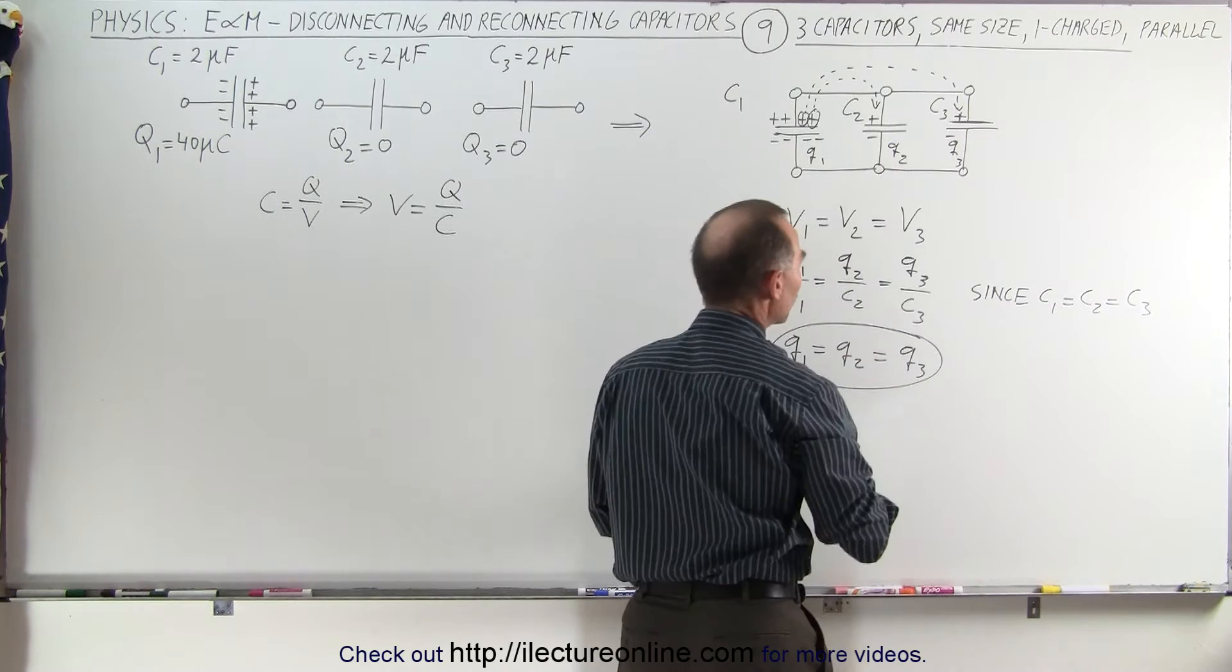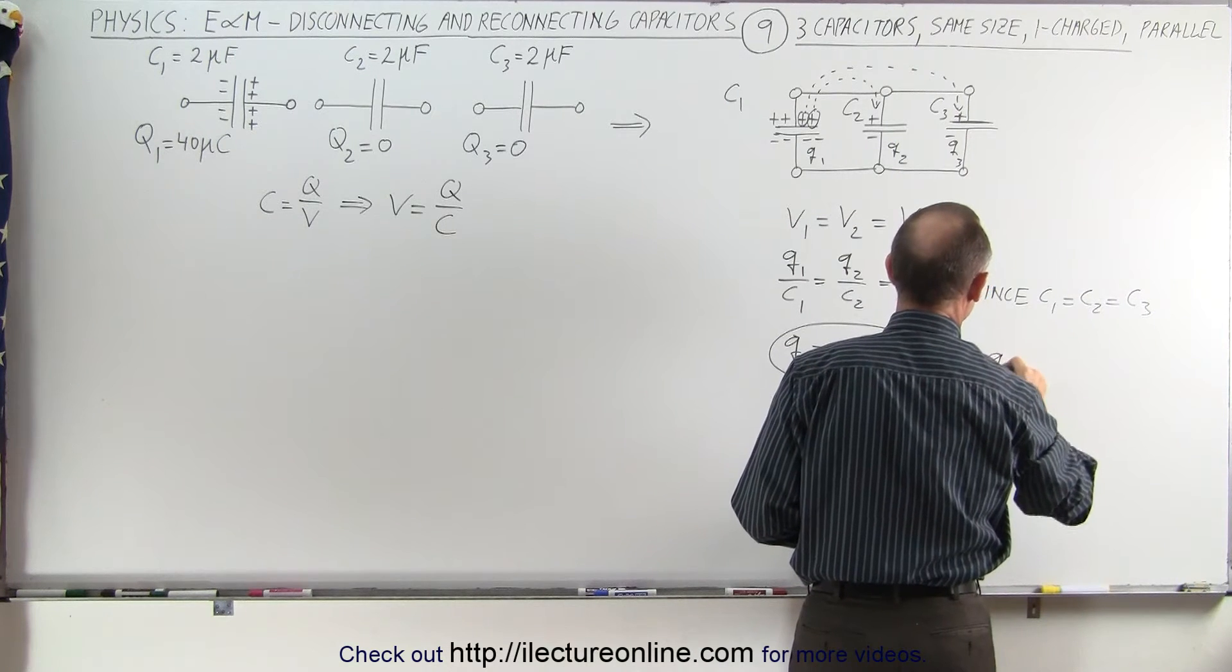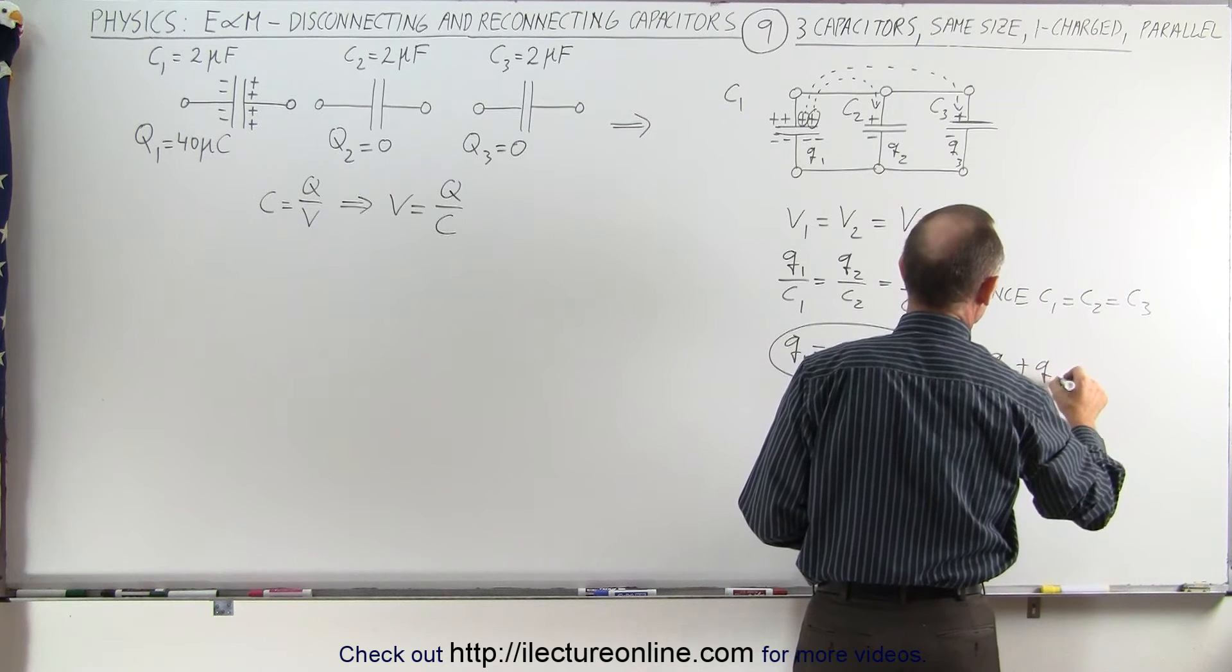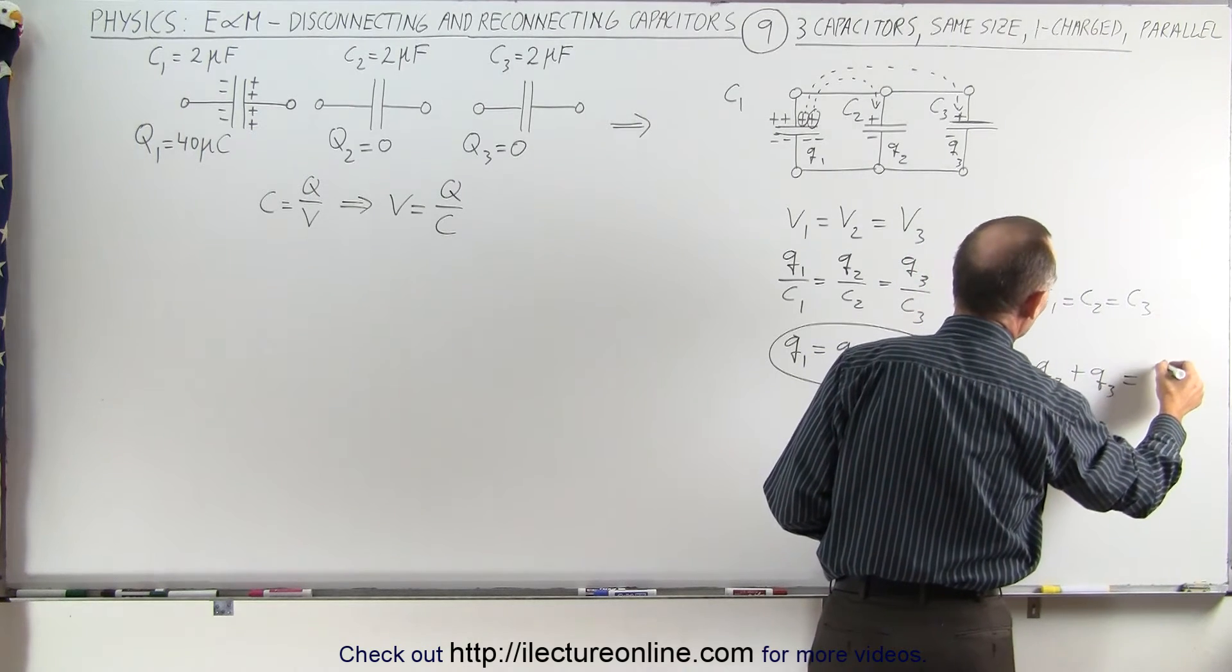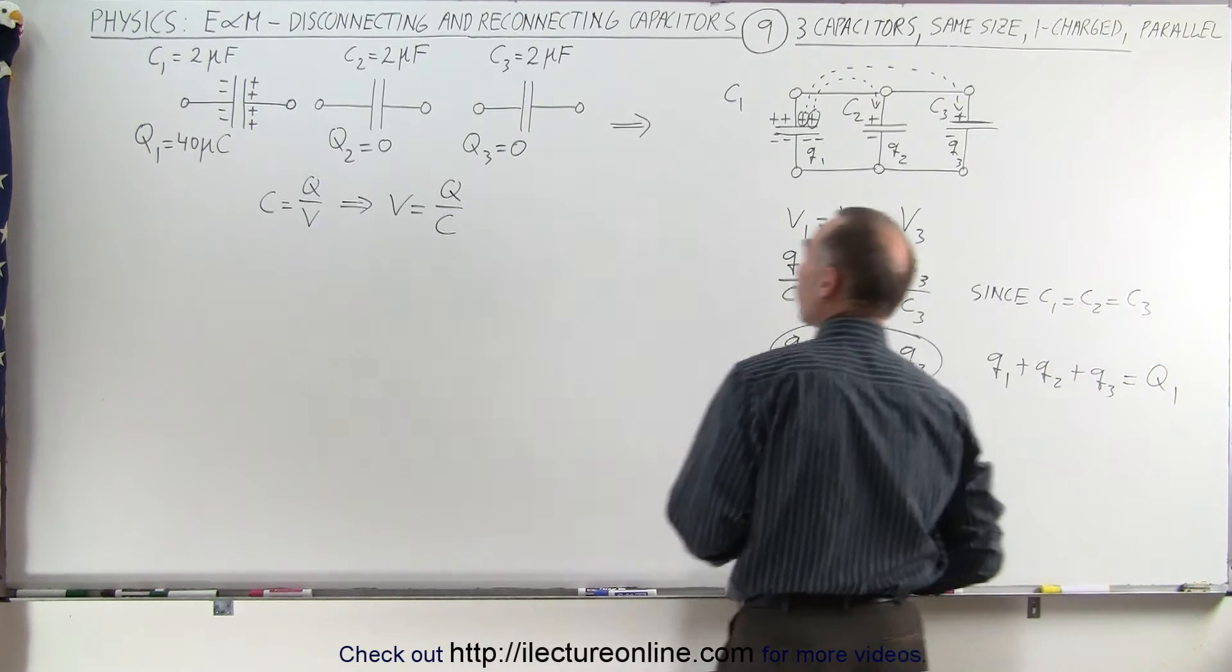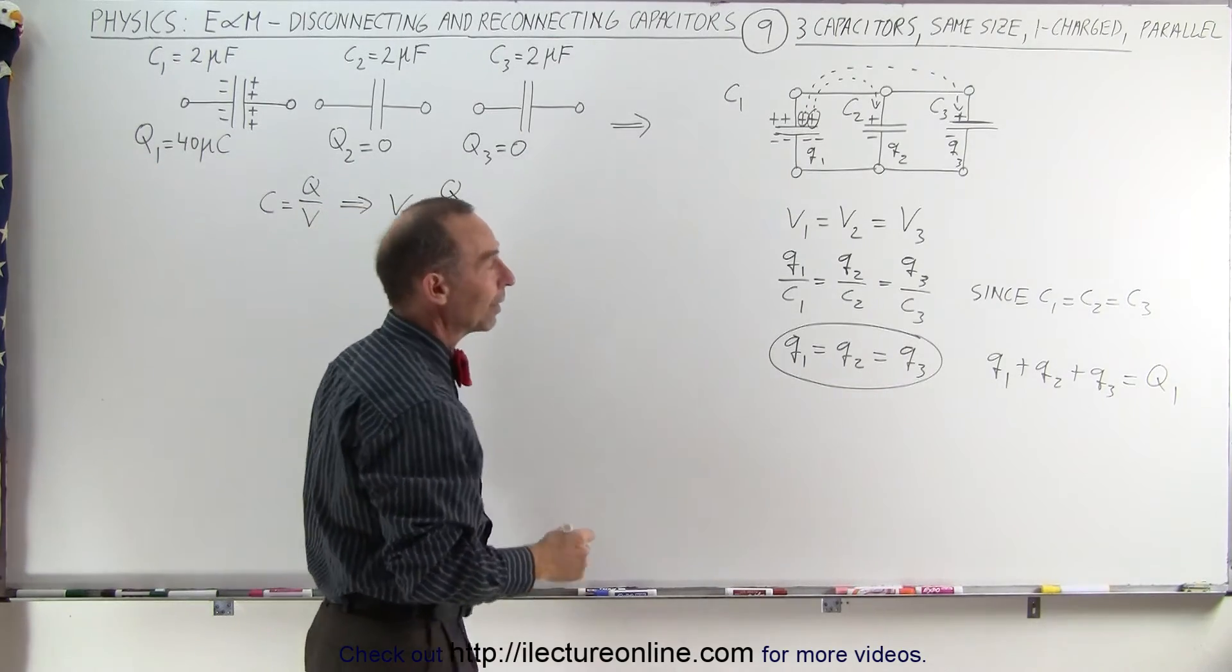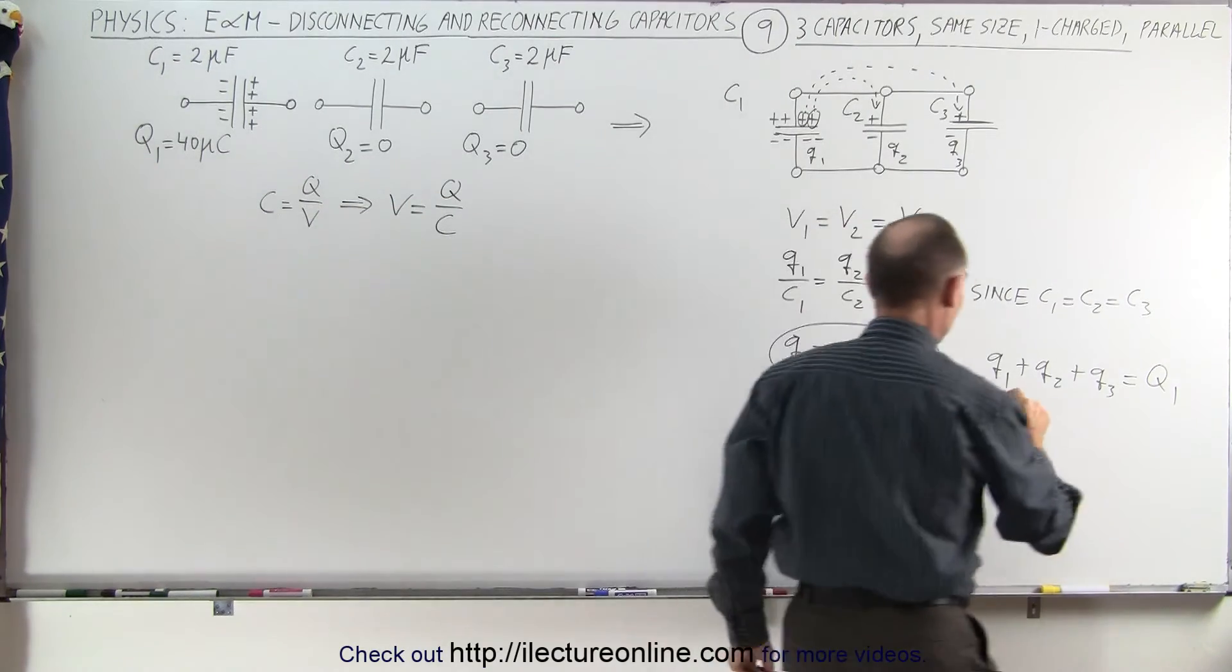This means that the sum of the three charges—Q1 plus Q2 plus Q3—must equal the total charge you started with, which was the total charge on Q1 to begin with.